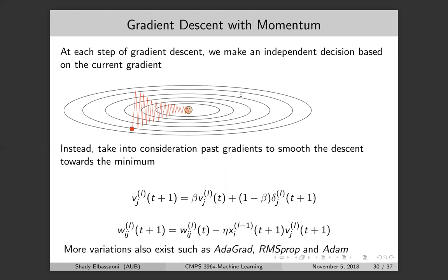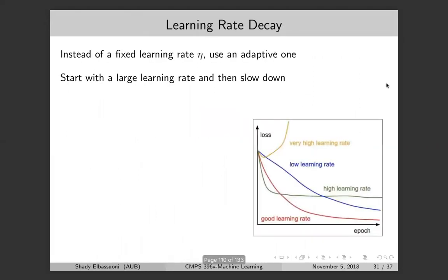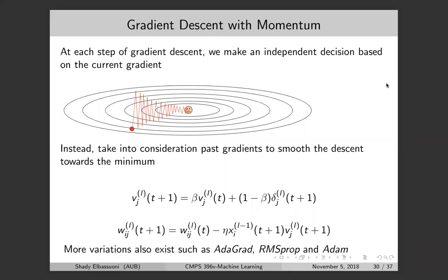There are a lot of optimizers that exist for this, such as AdaGrad, RMSProp, and Adam. All you have to do in the library is specify which optimizer you want to use. You typically set the beta value as a hyperparameter. I encourage you to use gradient descent with momentum rather than plain gradient descent — it usually works better in practice.